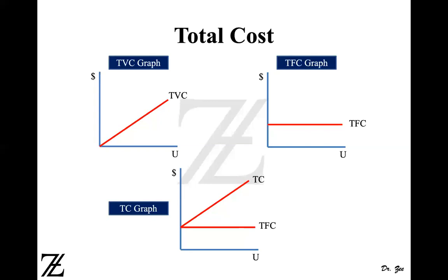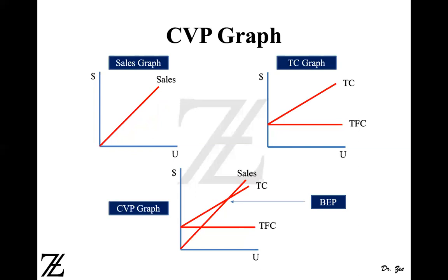In cost volume profit analysis, we combine those graphs. First we had the sales graph, then the total cost graph, and now we are going to combine them — the sales graph and the total cost graph — to make a cost volume profit graph, also called a break-even graph. The sales line starts from the origin, and where the sales line meets the total cost line is the break-even point.